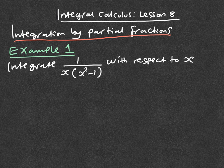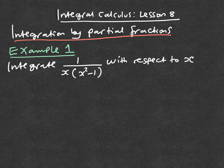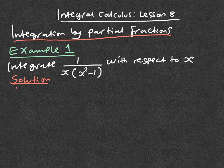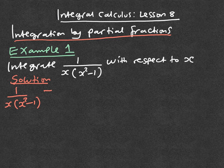Example 1 tells us to integrate 1 over x times x squared minus 1, with respect to x. The first thing we have to do is get 1 over x times x squared minus 1 and resolve this into partial fractions.